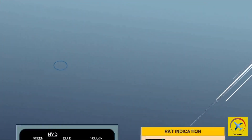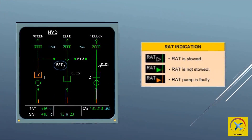Ram air turbine control indication displays white when the RAT is stowed, green when operating, and amber when extended but not operating.